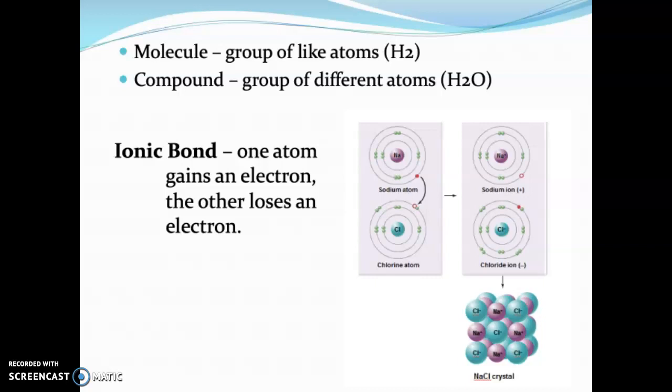Now one way of them sticking together is through what we call an ionic bond. So you have two atoms or elements, one of them gains an electron and the other loses an electron. That's an ionic bond. So our example here is sodium chloride.